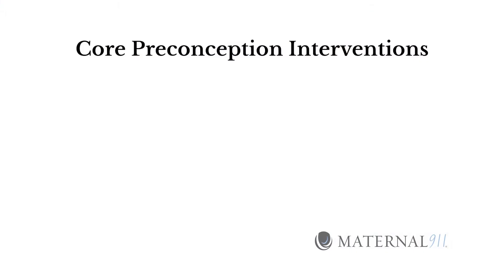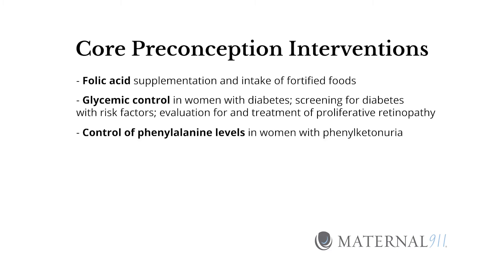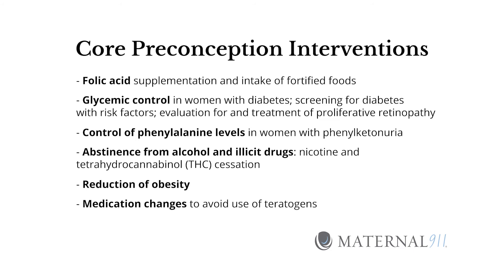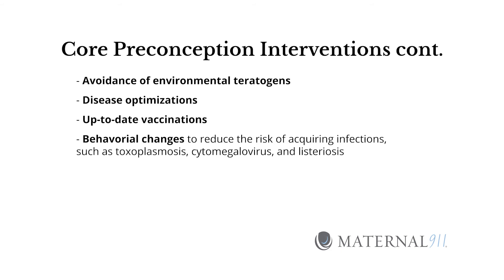Core preconception interventions that can reduce the occurrence of congenital disorders, fetal growth abnormalities, and pregnancy complications include: folic acid supplementation and intake of fortified foods; glycemic control in women with diabetes; screening for diabetes in women with risk factors; evaluation and treatment for proliferative retinopathy; control of phenylalanine levels in women with phenylketonuria; abstinence from alcohol and illicit drugs including nicotine and THC; reduction of obesity; medication changes to avoid teratogens; avoidance of environmental teratogens; disease optimization; ensuring vaccinations are up to date; and behavioral changes to reduce the risk of acquiring infections such as toxoplasmosis, cytomegalovirus, and listeriosis.